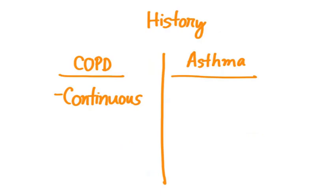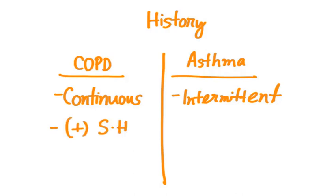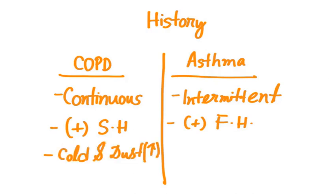In COPD, the symptoms are continuous — the patient will have symptoms throughout the year. But in asthma, the symptoms will be intermittent, meaning there will be a symptom-free period. In COPD, the patient will have a positive smoking history; in most cases the patient is a chain smoker with at least 10 pack-years. In asthma, we will often find a family history of asthma. COPD exacerbates in cold and dust, while in asthma the allergen is the main factor for exacerbation.